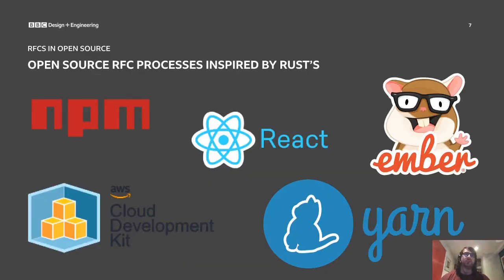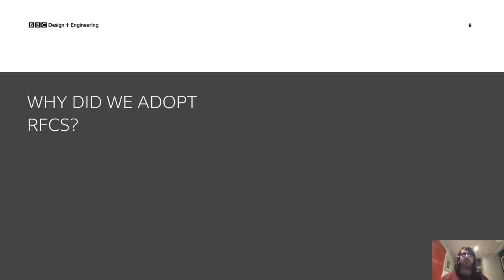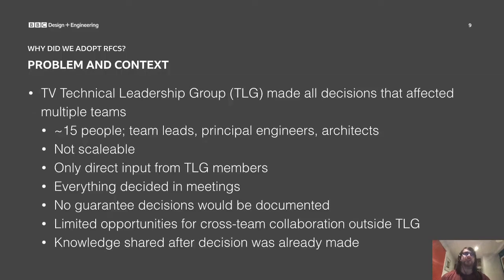I highlight Rust because it's what we based our RFC process on, but also in my research I found that there were many other open source projects that use RFCs inspired by Rust. So why did we adopt RFCs? It's worth looking at the problem space and the context that we found ourselves in before we chose to adopt them.